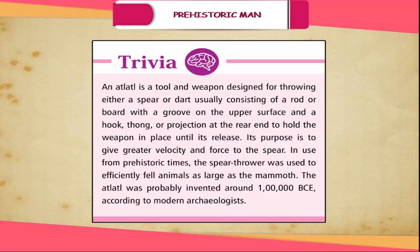Trivia: The atlatl is a tool and weapon designed for throwing either a spear or dart, usually consisting of a rod or board with a groove on the upper surface and a hook, thong or projection at the rear end to hold the weapon in place until its release. Its purpose is to give greater velocity and force to the spear. In use from prehistoric times, the spear-thrower was used to efficiently fell animals as large as the mammoth. The atlatl was probably invented around 100,000 BCE, according to modern archaeologists.